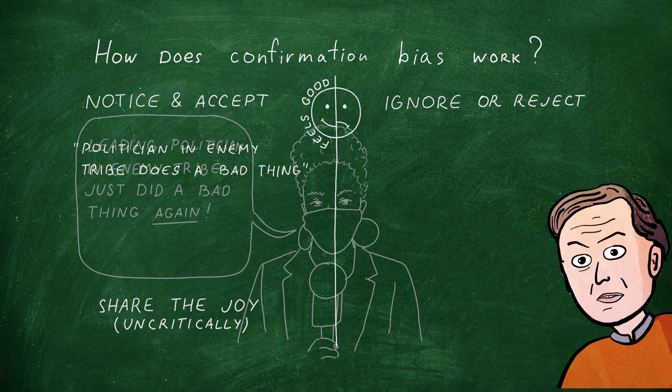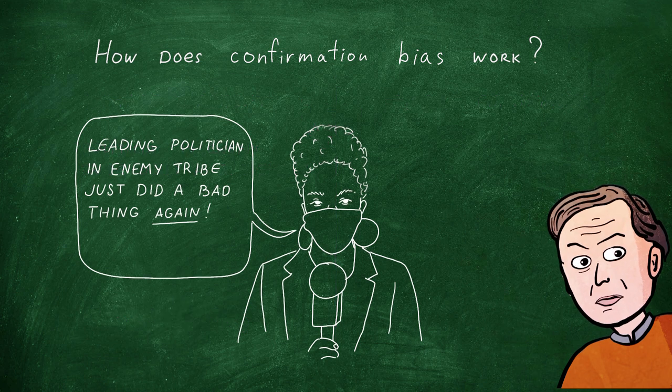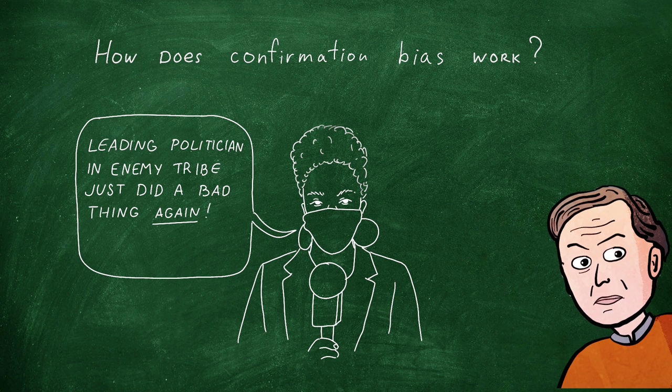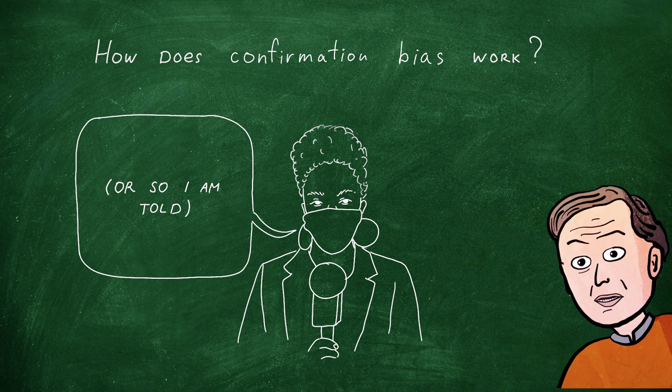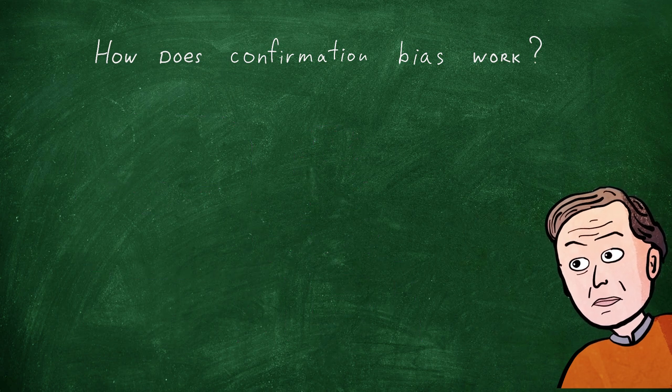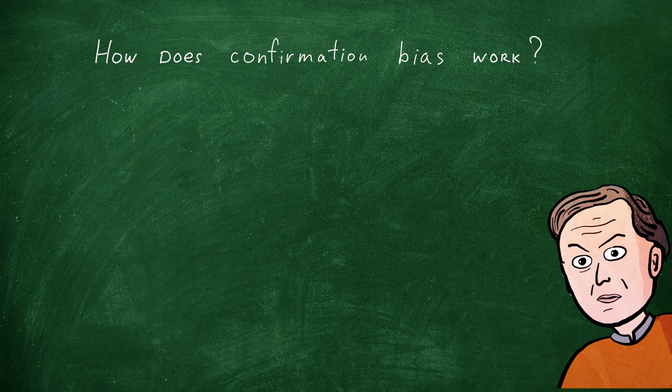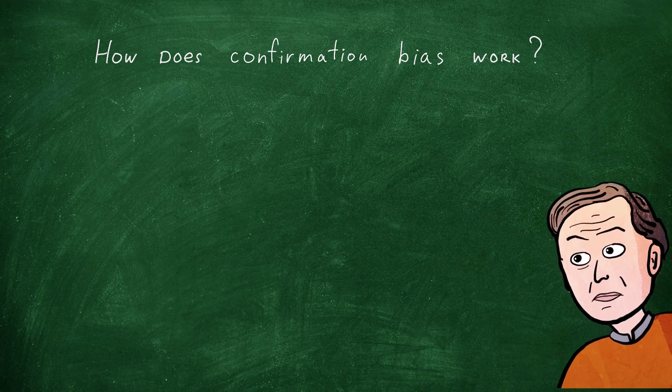There's a phrase journalists use for an anecdote that may be dubious, but is a real attention-getter. They say the anecdote is too good to check. Well, the way confirmation bias works is that some bits of news feel too good to check. They also feel so good that they are very memorable, and therefore easily accessible for frequent repetition.